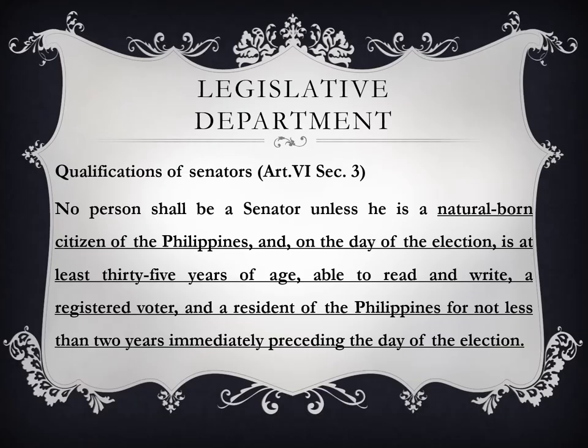Let us see the qualifications to become a Senator. Section 3 of Article 6 provides that no person shall be a Senator unless he is a natural-born citizen of the Philippines, at least 35 years of age on the day of election, able to read and write, a registered voter, and a resident of the Philippines for not less than 2 years immediately preceding the day of the election.